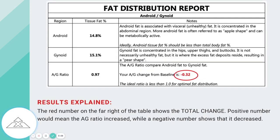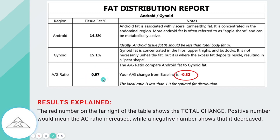The next thing we look at is on page two, about halfway down, which is the fat distribution report. You can see here that he went down by 0.32. This means his android decreased and got below the percentage of his gynoid — which we see here is very close at 14.8 and 15.1. Now his AG ratio is less than one, which is ideal. A stretch goal could be to get this down to 0.8, which is an optimal range to have much less body fat in your stomach than in your gynoid — that's going to be good for long-term health.